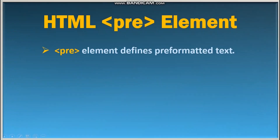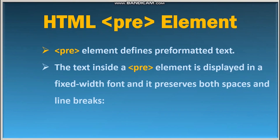Now we learn about the HTML pre element. The pre element defines preformatted text. For example, if you want to write a poem in an HTML document — as you know, in a poem each sentence is written on its own line — you use the pre element. The text inside a pre element is displayed in a fixed-width font and it preserves both spaces and line breaks.